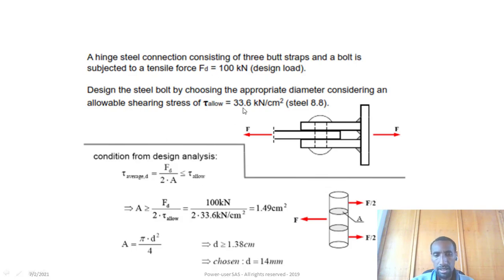The maximum allowable shear stress τ_allow = F/(2A). Therefore, A = F/(2τ_allow) = 100kN/(2 × 33.6 kN/cm²) = 1.49 cm². The cross-sectional area of the bolt should not be less than 1.49 cm².